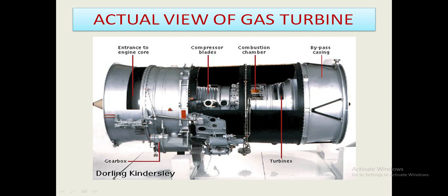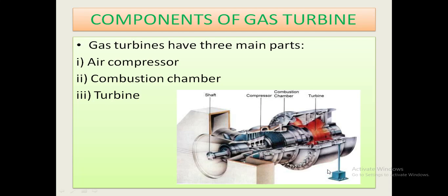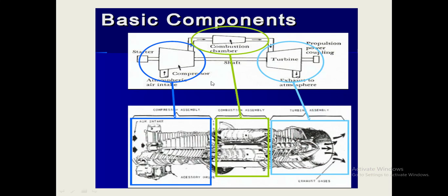This is the actual view of a gas turbine. This one is the entrance to the engine core, this is the gearbox, this is the compressor blades, this is the combustion chamber, this is the turbine, and this is the bypass casing. Gas turbines have three main parts: the air compressor, combustion chamber, and turbine. This is the schematic diagram of the basic components of a gas turbine, showing the compressor, the combustion chamber, and the turbine.